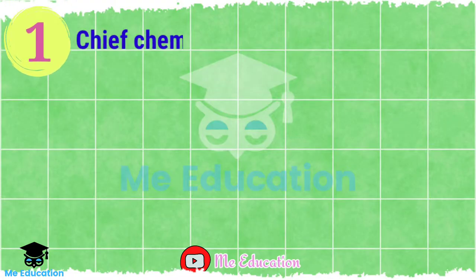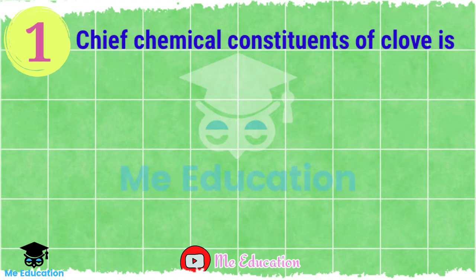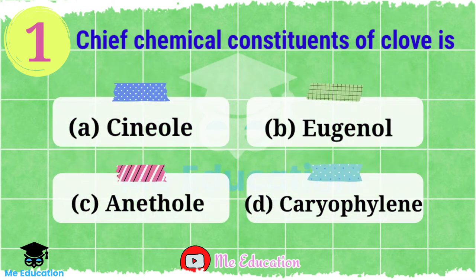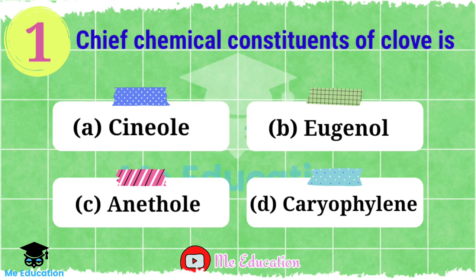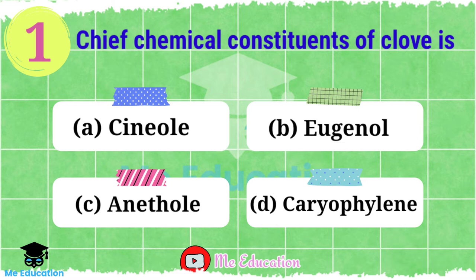Here we have the first question on screen. The chief chemical constituent of clove is: Option A — cinnamole, Option B — eugenol, Option C — anethol, Option D — caryophyllene. Now you have to pause the video and try to answer this question. The right answer is Option B, eugenol.